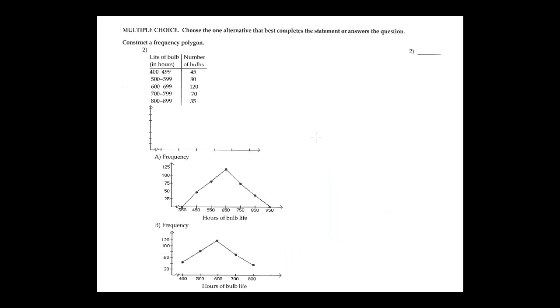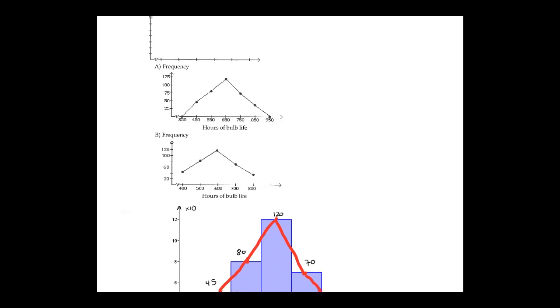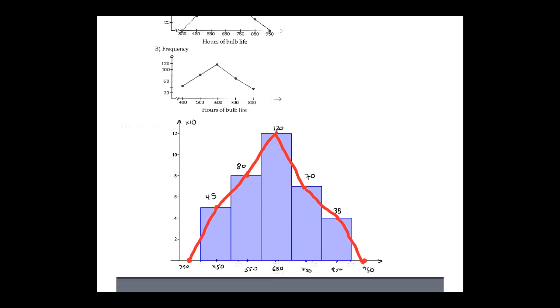Now a frequency polygon. This is the frequency distribution. This is similar to doing the histogram — I am doing the histogram here.